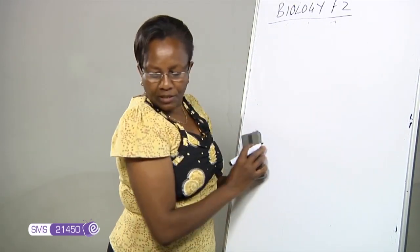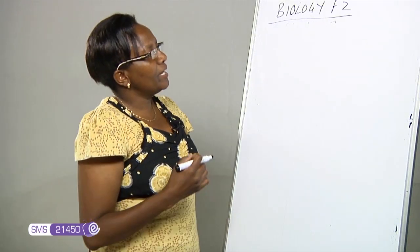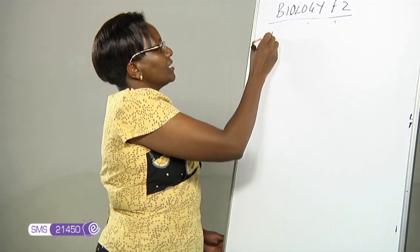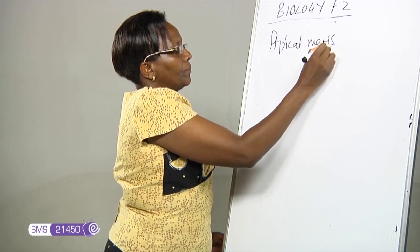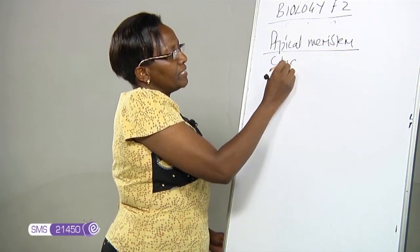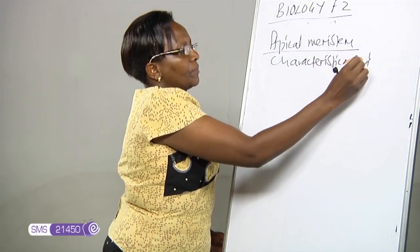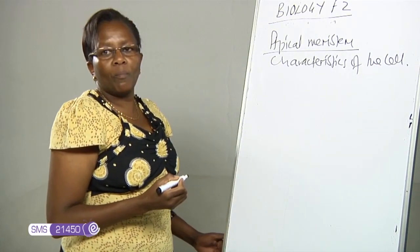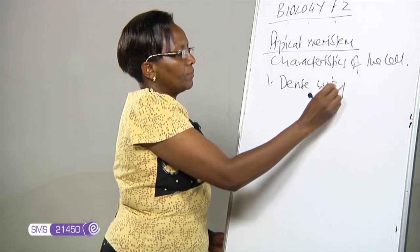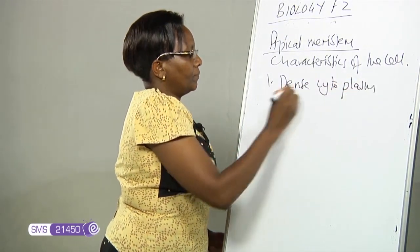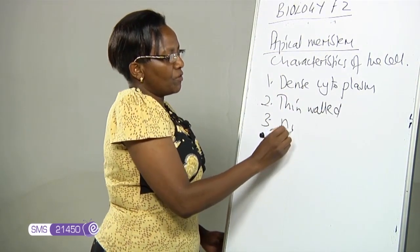To continue with what we were covering in the previous lesson, we were looking at the regions in the roots. We looked at the first region where we have the apical meristem. We looked at the characteristics of the cells in the apical meristem region: they have dense cytoplasm, they are thin-walled, and they have no vacuoles.